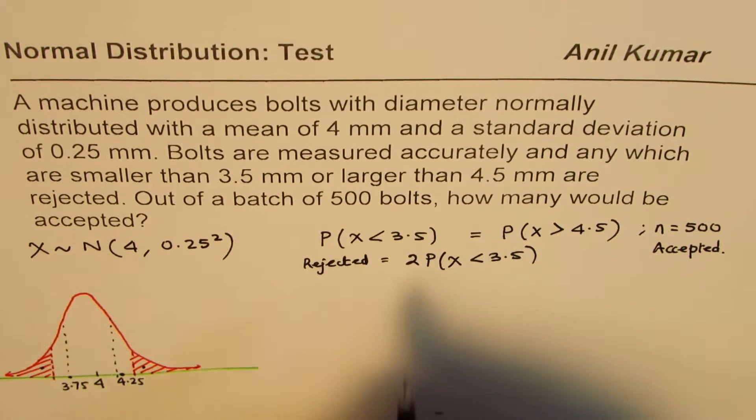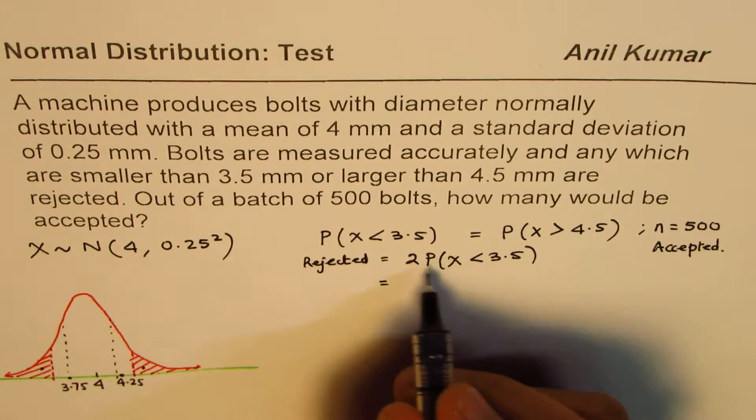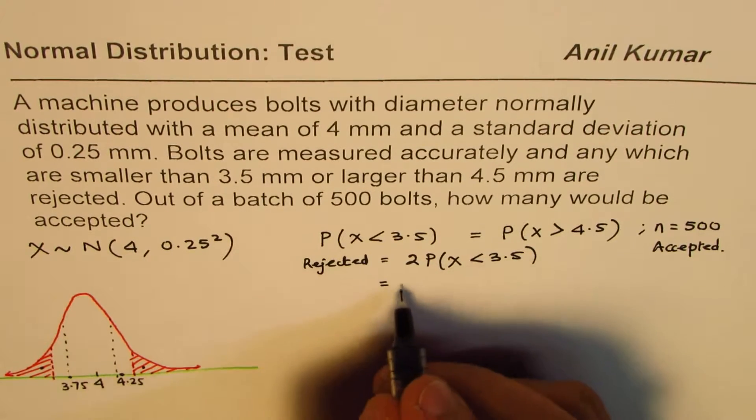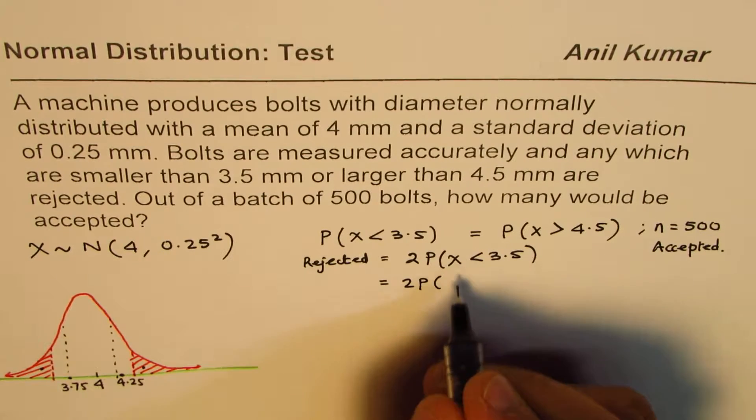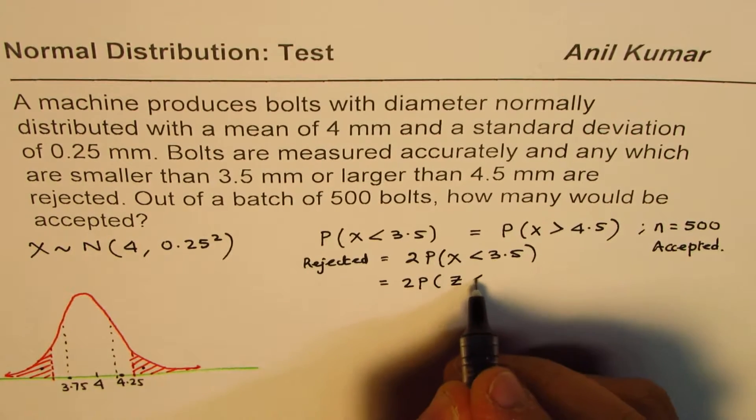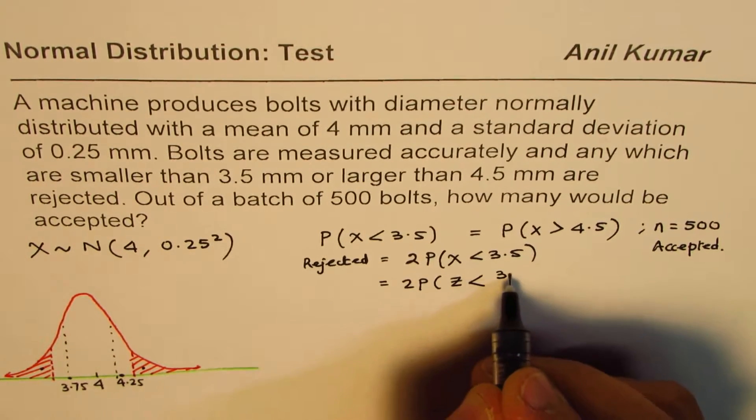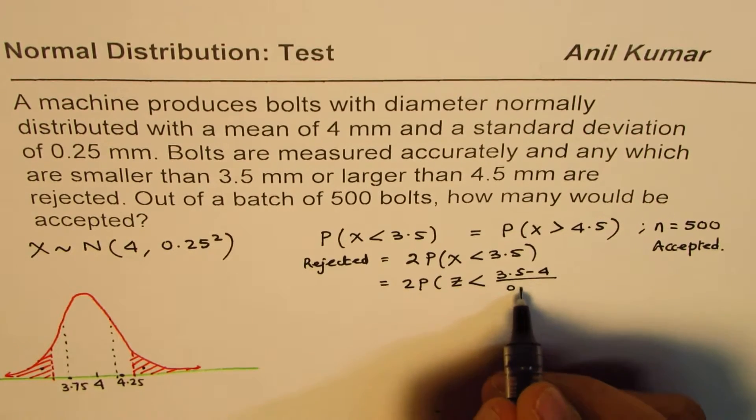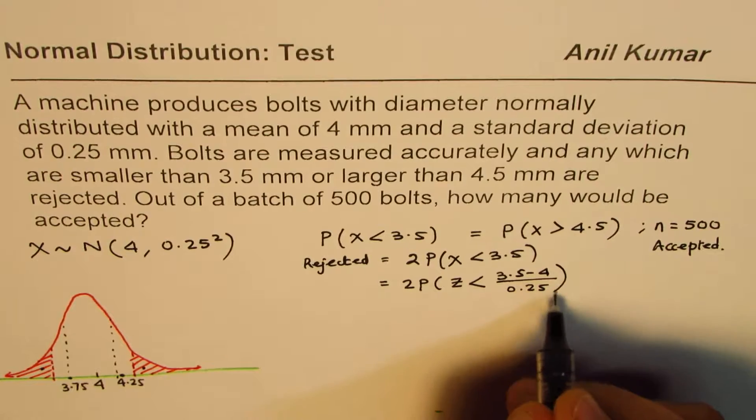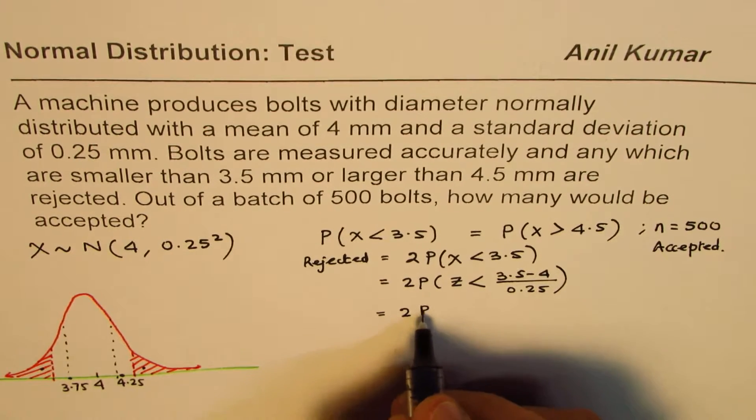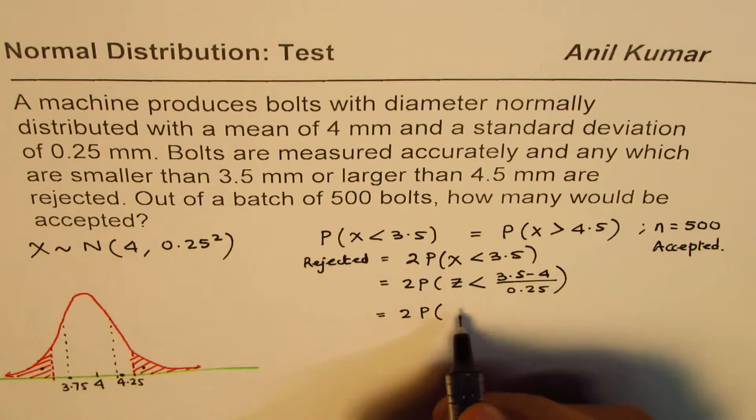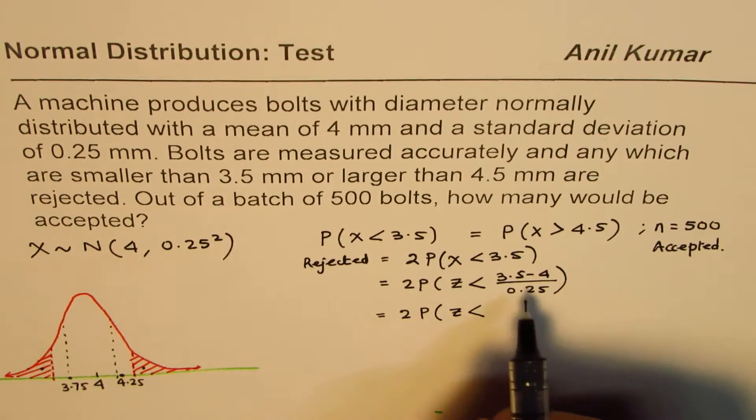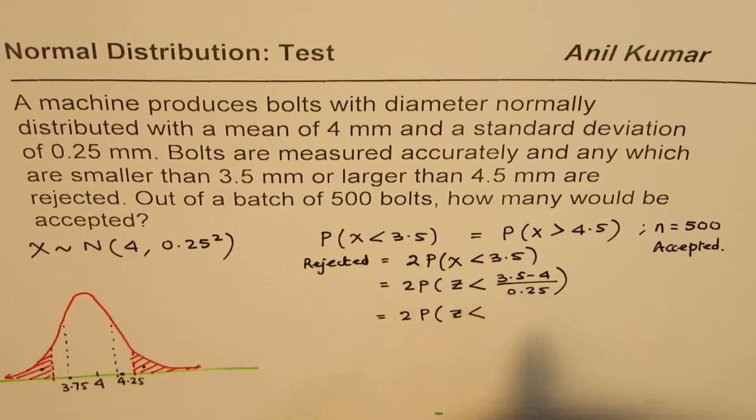Now to find that probability we have a probability density curve, we can convert this to z values. So z values will be: take away the mean which is 4, divided by standard deviation which is 0.25.